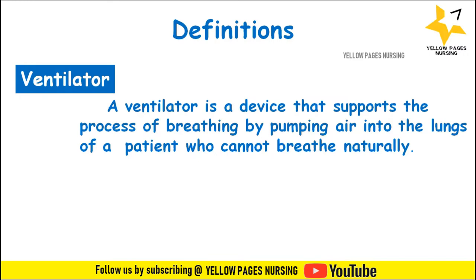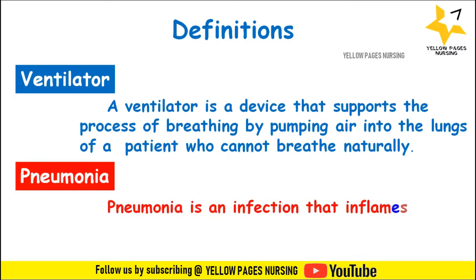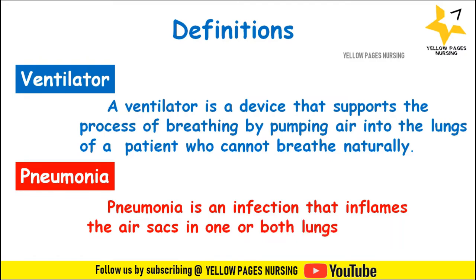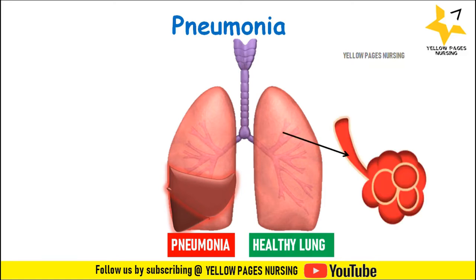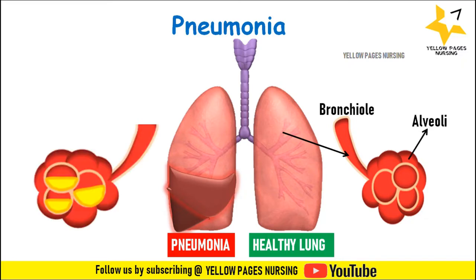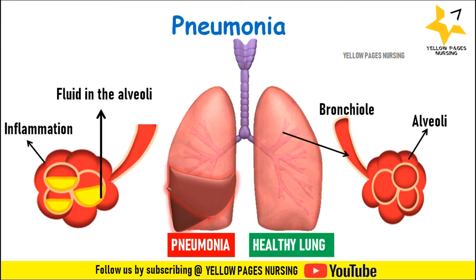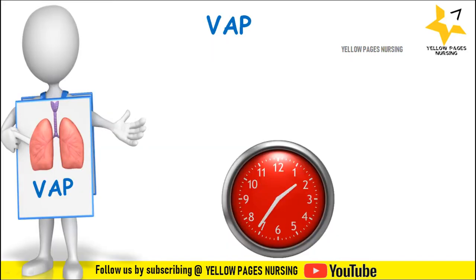What is pneumonia? Pneumonia is an infection that inflames the air sacs in one or both lungs, and the air sacs may fill with either fluid or pus. Here is a picture which describes the difference between a healthy lung and a lung affected with pneumonia. The left lung which is healthy shows how a healthy alveoli looks, while the right lung affected with pneumonia shows alveoli that are inflamed and filled with fluid or pus.